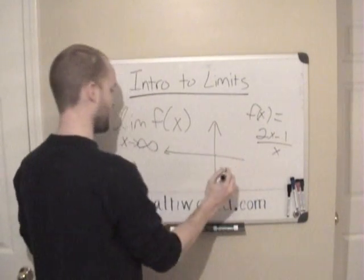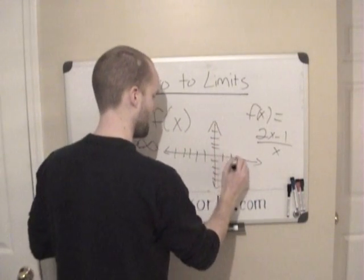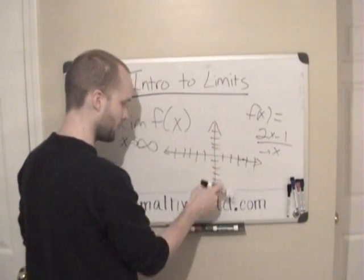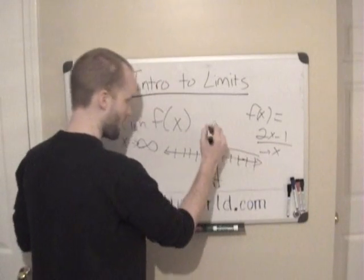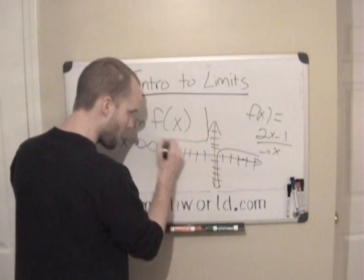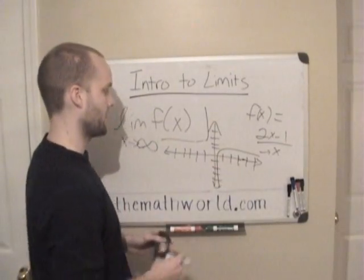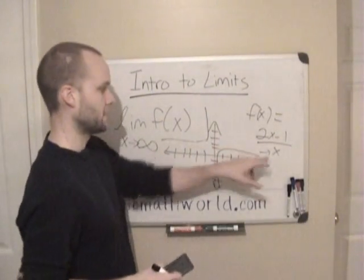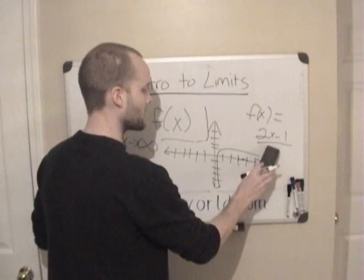If we graph this out, we know x will get closer and closer to infinity. We know right away that it's undefined at 0, since 0 cannot be on the bottom, so it's not a continuous line on this graph. As you can see in this graph, what we're looking for is: as x gets bigger and bigger, what does this function approach? The first thing we can do is start plugging in numbers to see where it approaches.